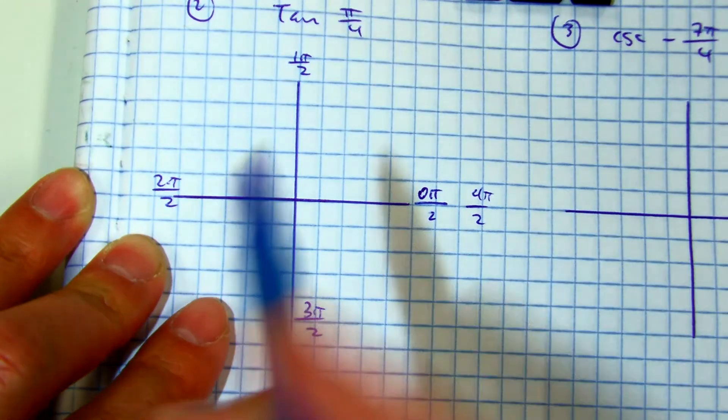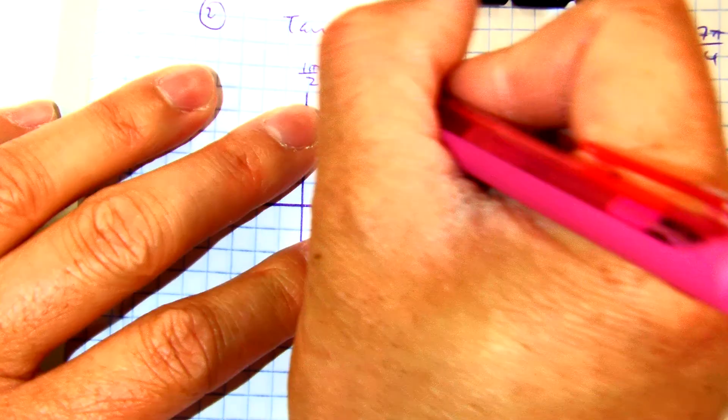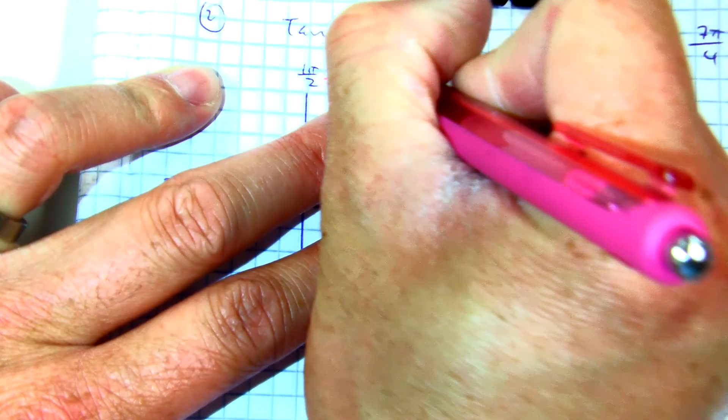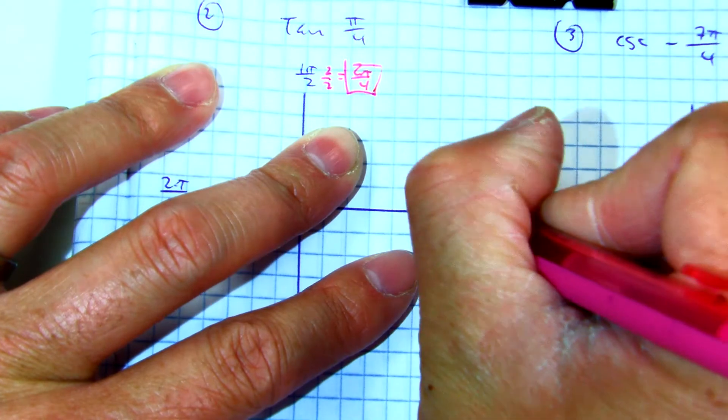I want a common denominator of 4 to help us understand where it's at. So I might have to multiply by 2's. To get an equivalent fraction, this would be 2 pi over 4. So this would be 0 pi over 4, right? If you multiply it by 2.